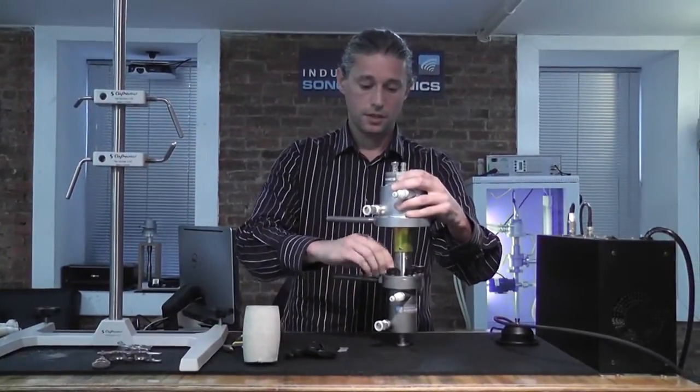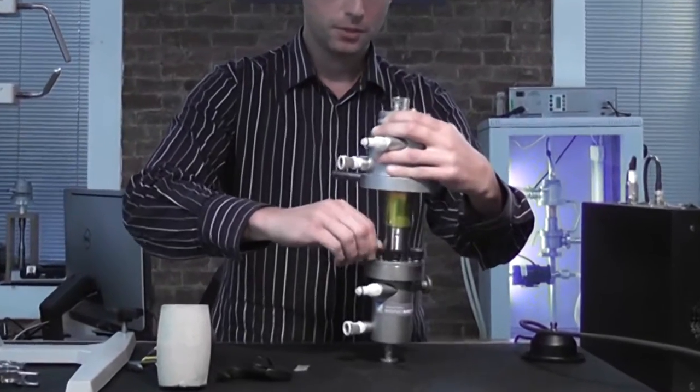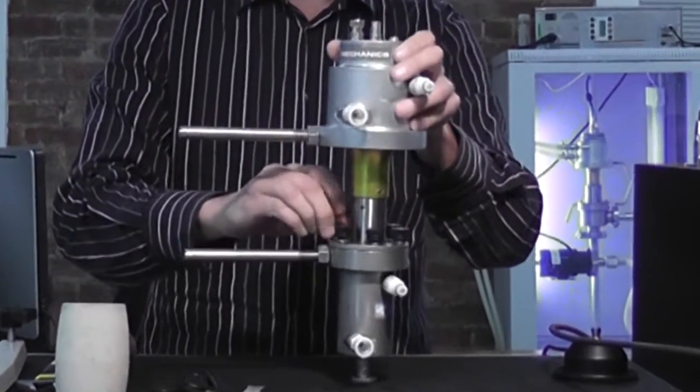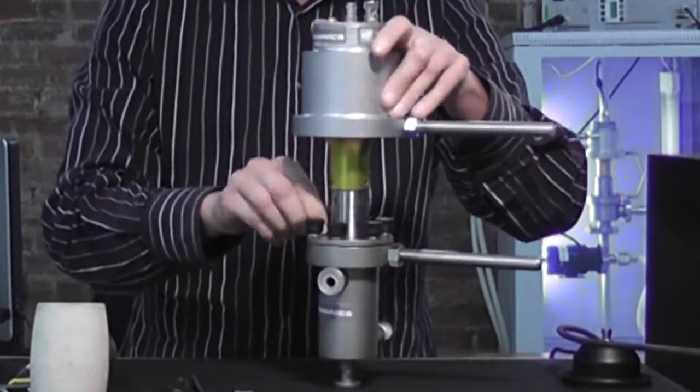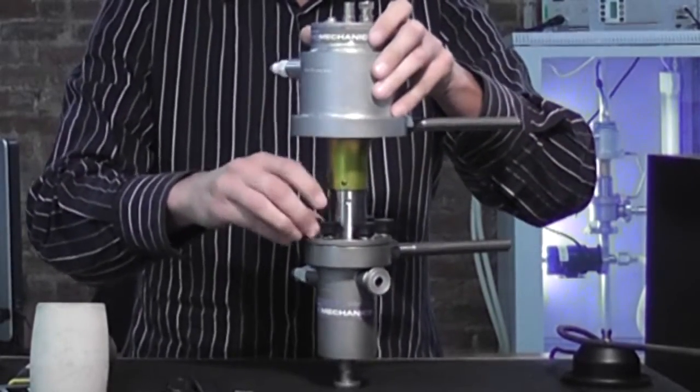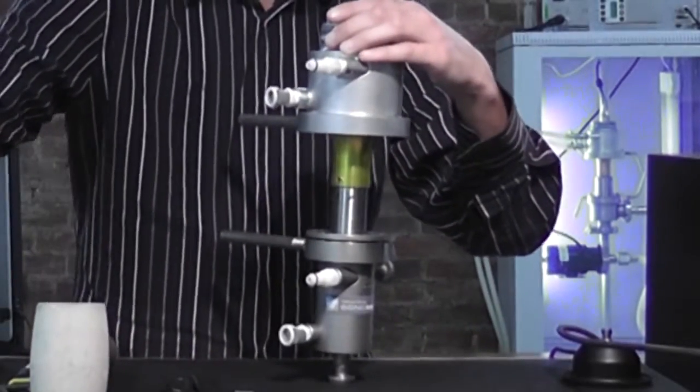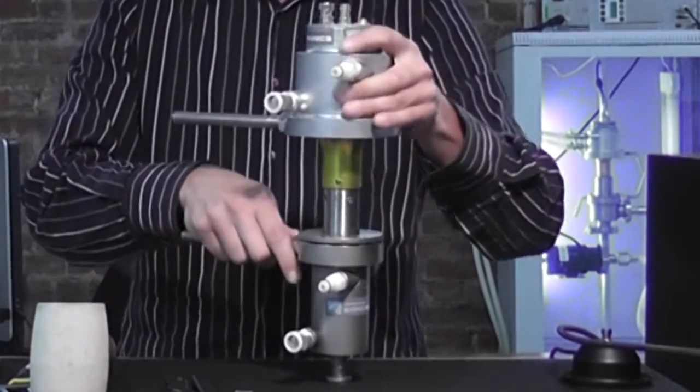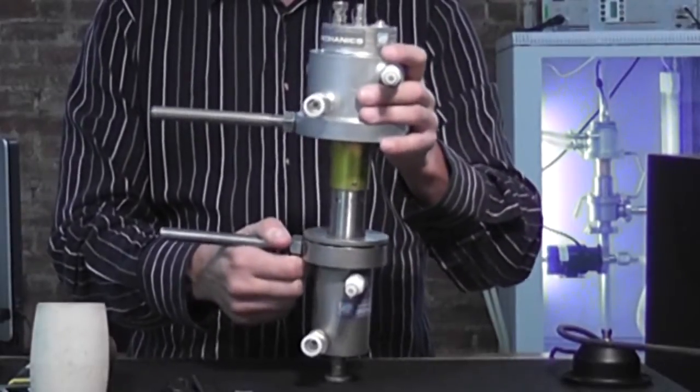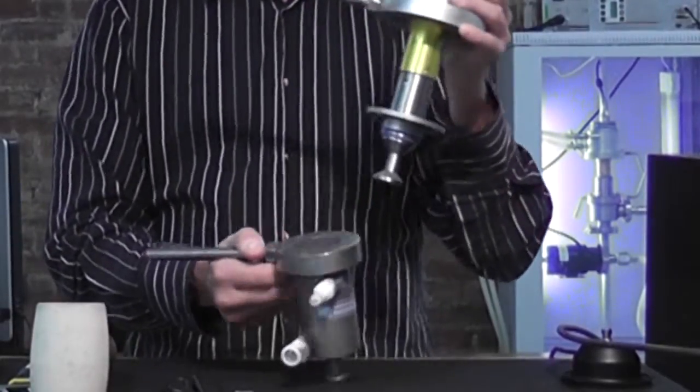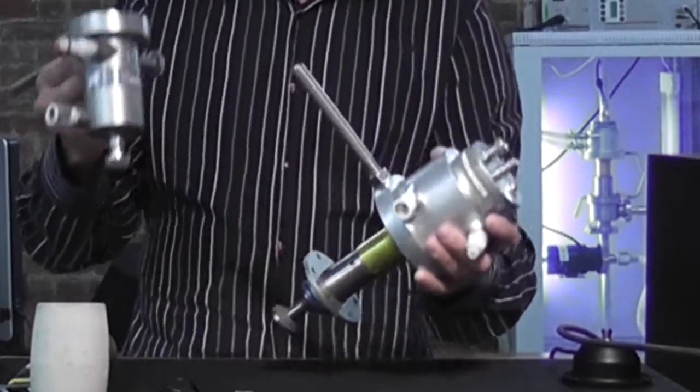Next, take out the thumb bolts that hold the horn and the transducer inside the reactor chamber. This can easily be done by hand. At this point, the transducer and the horn can be taken out of the reactor chamber. We're done with this part for now.